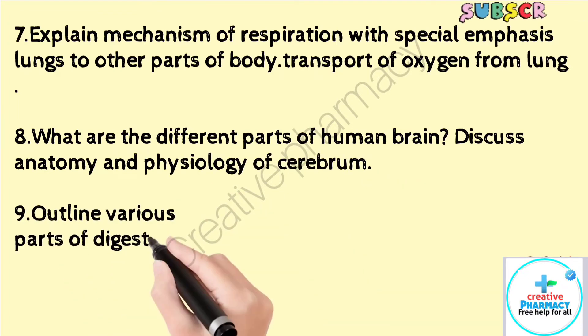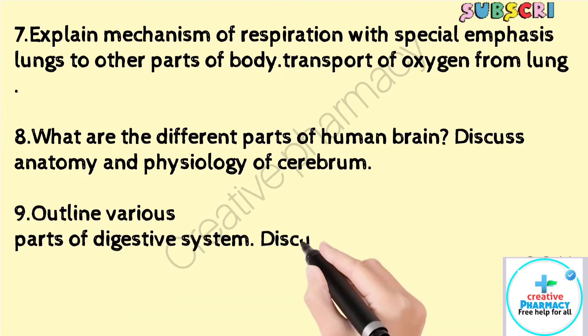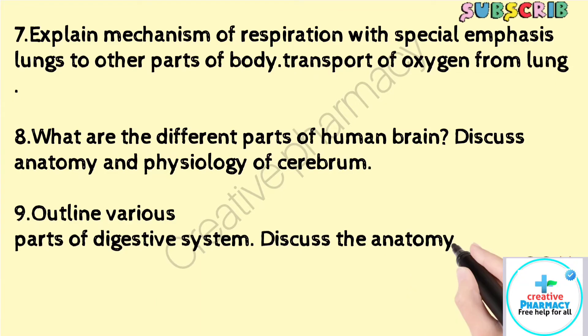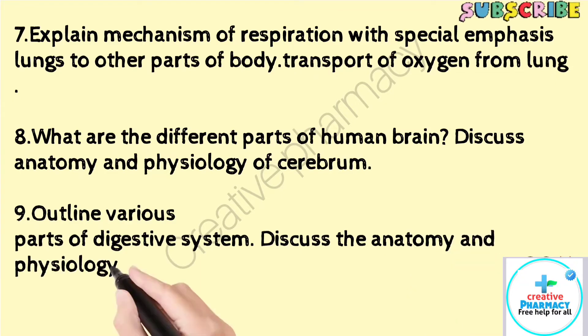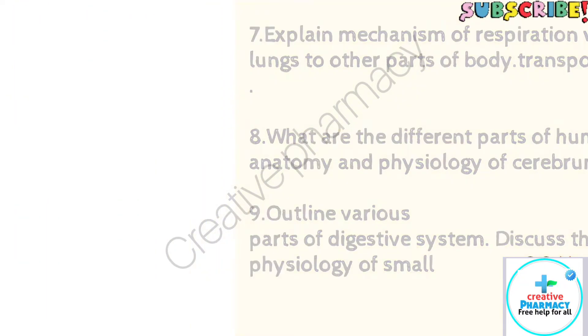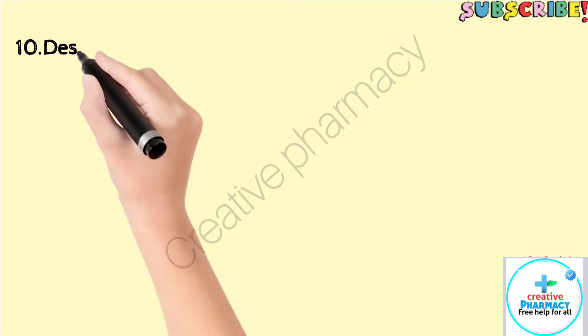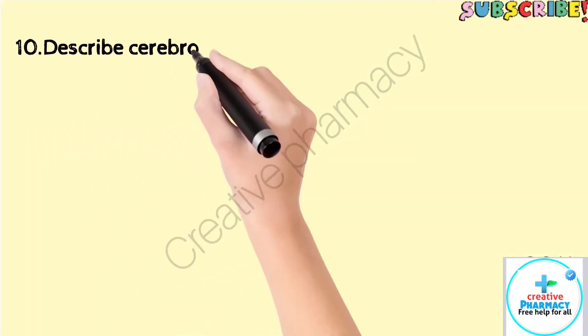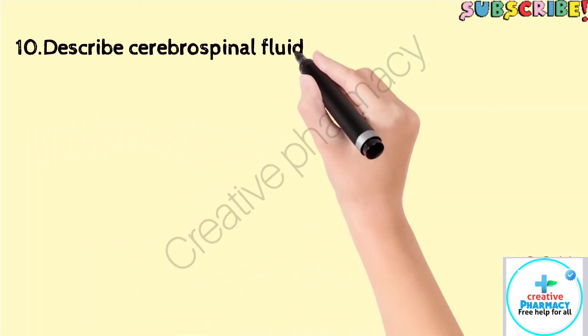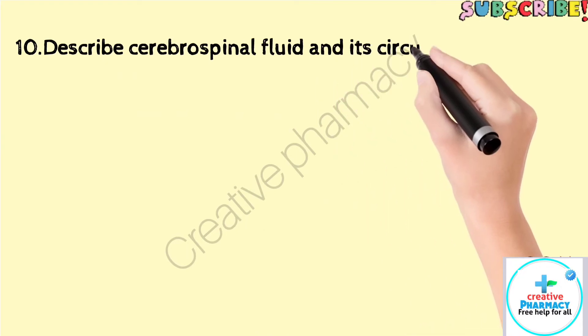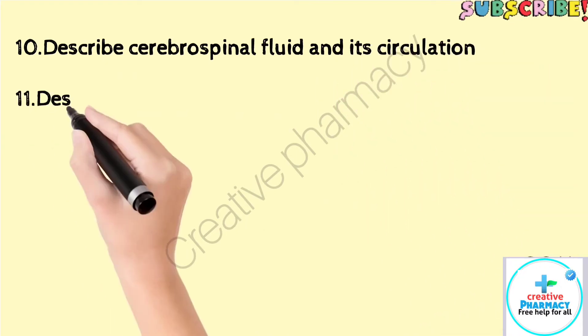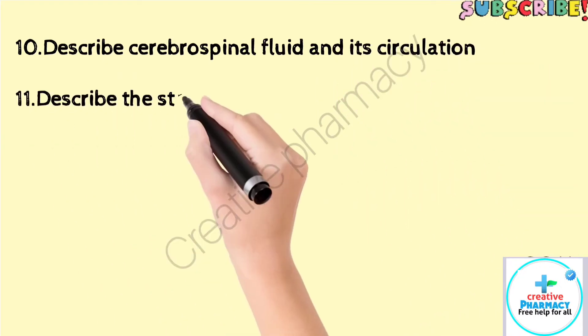Question 9: Outline various parts of the digestive system and discuss the anatomy and physiology of the small intestine. Question 10: Describe cerebrospinal fluid and its circulation.